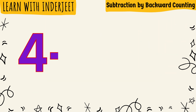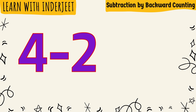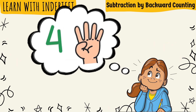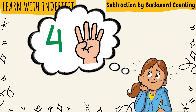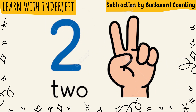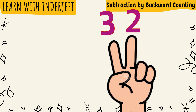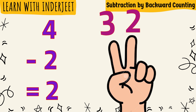Our next sum is 4 minus 2. So keep 4 in your mind and 2 on your fingers and start backward counting. 3, 2. We will reach at 2. So 2 is our answer.